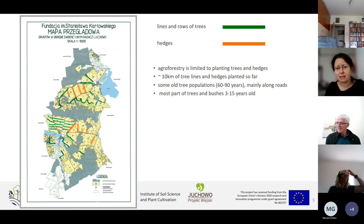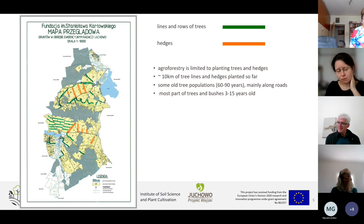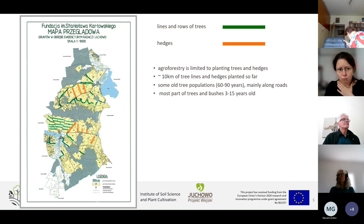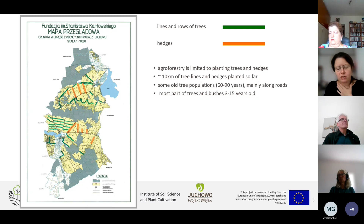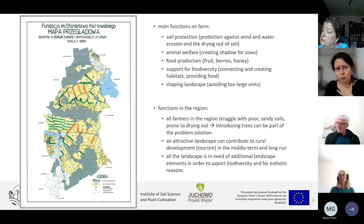Our agroforestry activities are limited to planting trees and hedges. So far we have planted approximately 10 kilometers of trees and hedges. There are some old tree populations planted by former generations, found mainly along roads, but those trees and hedges planted by the You Hover Village Project are quite young — only 13 to 15 years old.